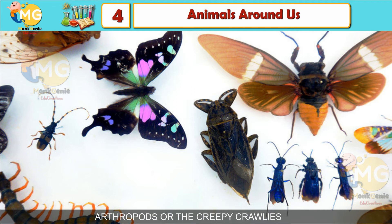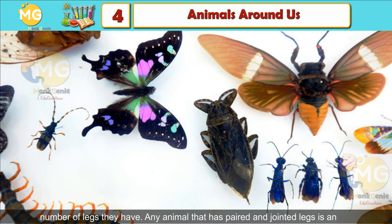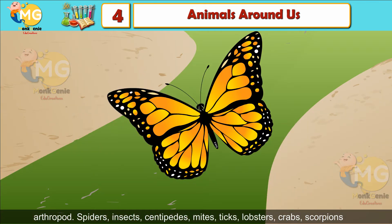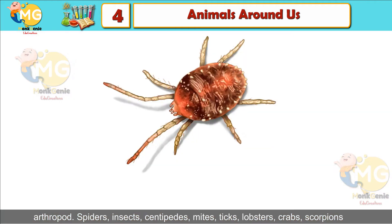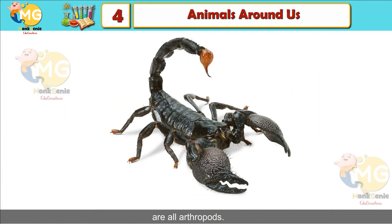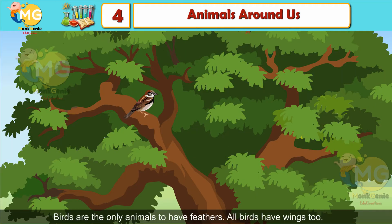Arthropods, or the creepy crawlies: Arthropods form a very large group of animals. We can identify them by the number of legs they have. Any animal that has paired and jointed legs is an arthropod. Spiders, insects, centipedes, mites, ticks, lobsters, crabs and scorpions are all arthropods.